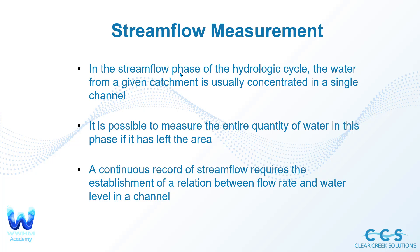A continuous record of stream flow requires the establishment of a relation between flow rate and water level in a channel. We want to know what is the flow rate of this water in cubic feet per second, and then what is the water level in this channel. This can tell us a lot about the stream flow record and how to design downstream mitigation facilities or keep track of this data for other uses.